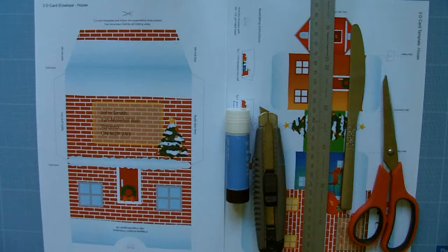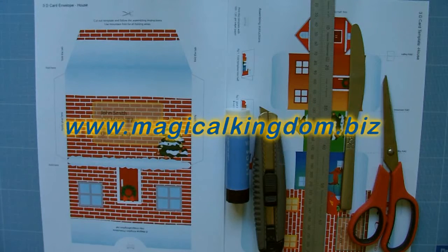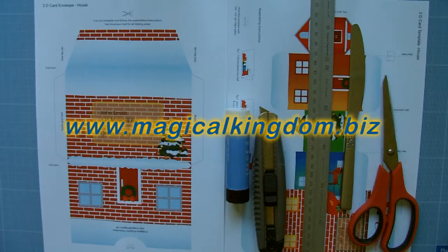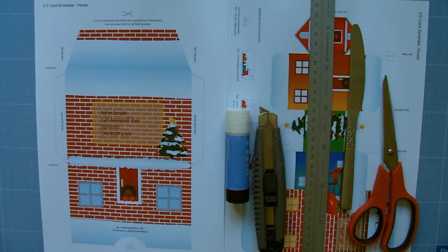For this project, you will need a cutting mat, a craft knife, a pair of scissors, a steel ruler, a blunt knife, a stick of glue, and most importantly, you can personalize and print out the templates at magicalkingdom.biz.